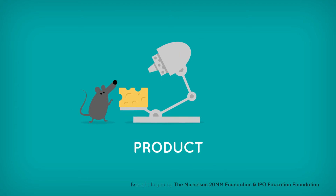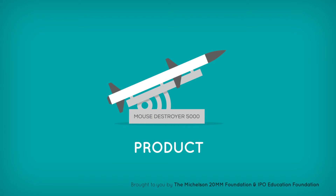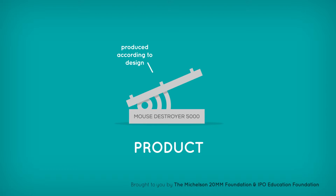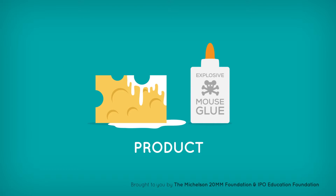Products are physical things. Like a machine — a tool that has one or more moving parts and uses energy. A manufactured item, a product or part that is produced according to design. Or a composition of matter, a newly synthesized chemical compound or molecule.